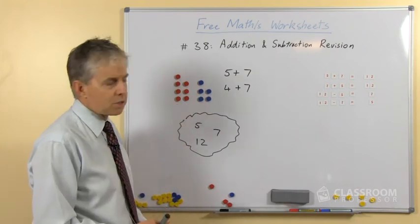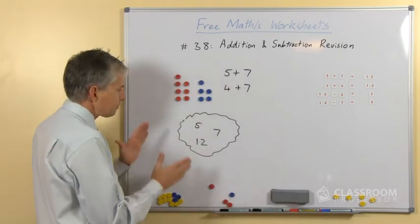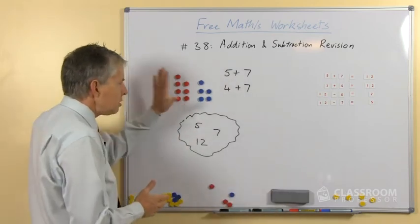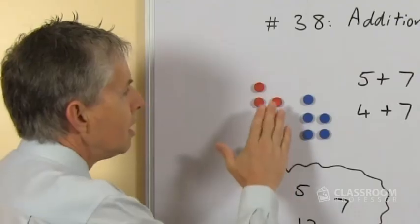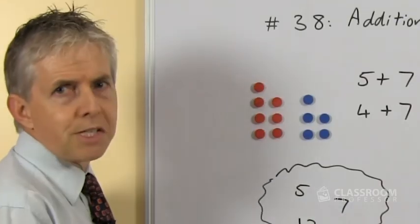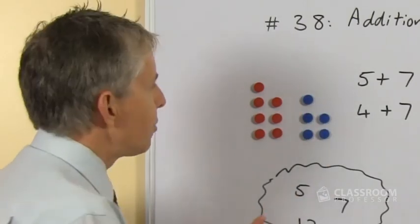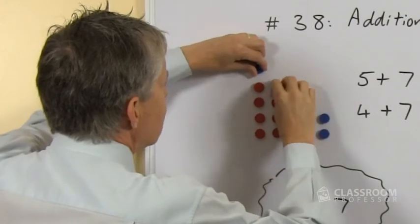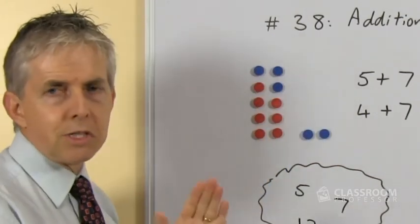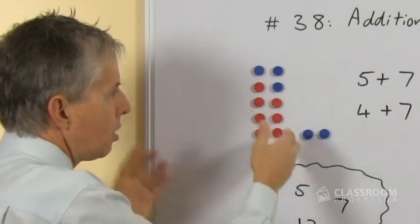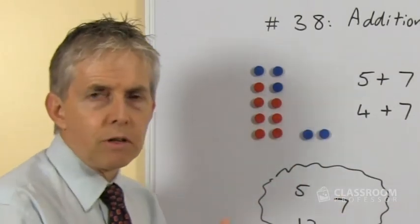Of course we have another set of numbers for 4, and that would be 4, 7, and 11. We can use 10 frames — I didn't draw the frames this time, but this is an arrangement for 7 and an arrangement for 5 within a 10 frame. It's quite easy to see that if we move 3 of these over, that will complete the first 10, making the number 12. If we were using 4, there'd be 1 left, so 4 and 7 is 11.